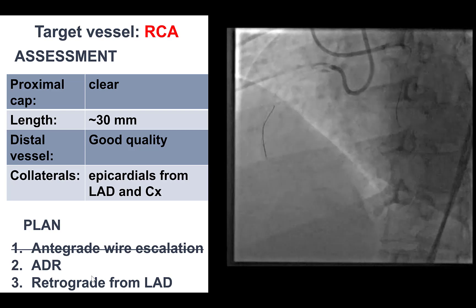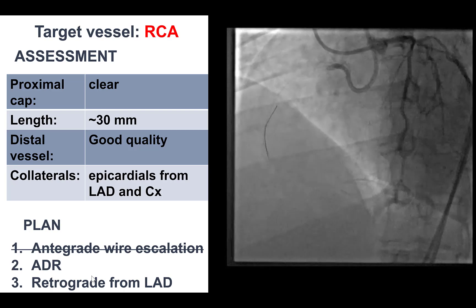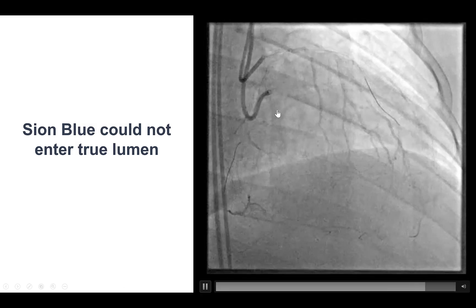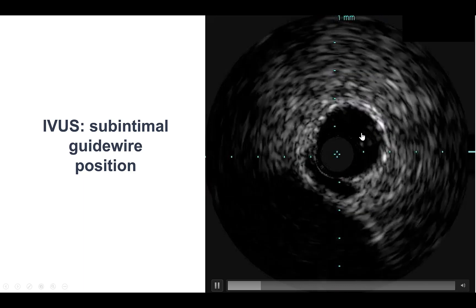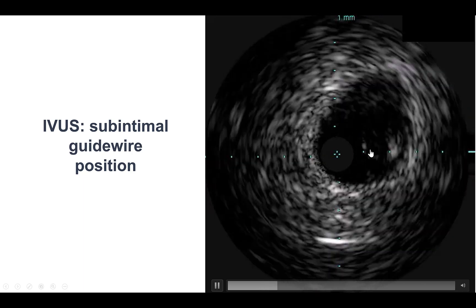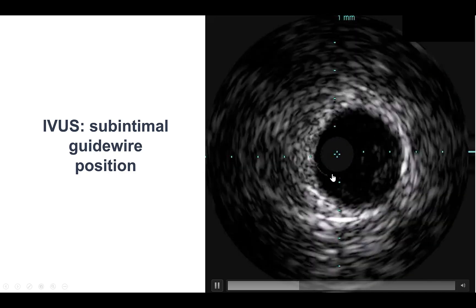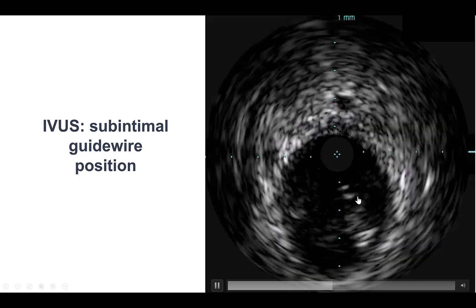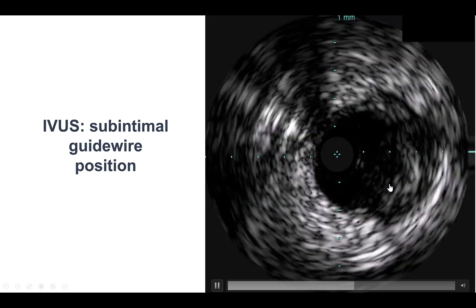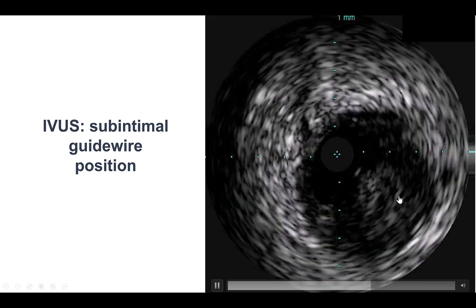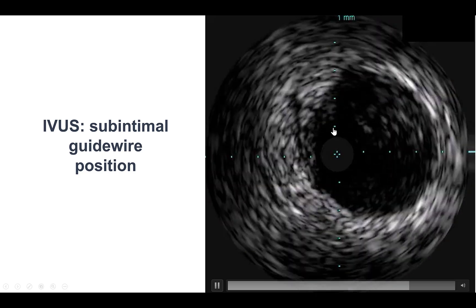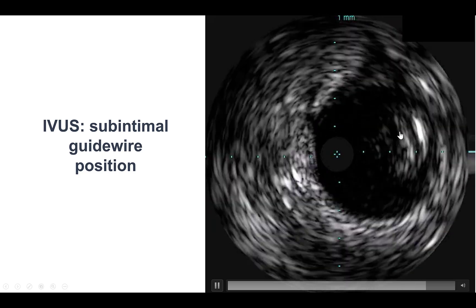Another approach could be to just let the right coronary artery recover and have the patient return for another attempt. We tried other workhorse guidewires, but they could not enter into the true lumen. The subintimal position of the guidewire was confirmed by intravascular ultrasound. The true lumen is actually compressed at two to three o'clock, and the IVUS catheter and the guidewire are located in the subintimal space. We also notice here that there is a compression of the true lumen, which could potentially make re-entry very challenging — which was indeed the case as we'll see shortly. Here is the true lumen, here is the subintimal space — a large subintimal space making re-entry into the true lumen quite challenging.